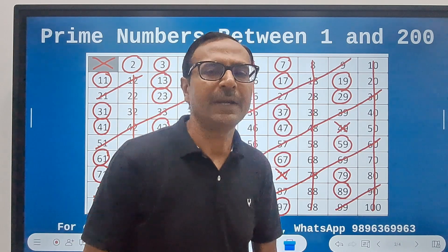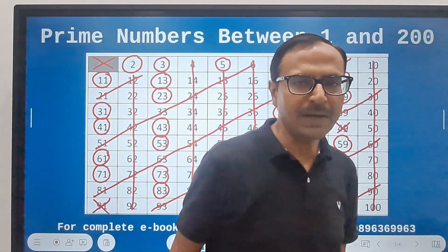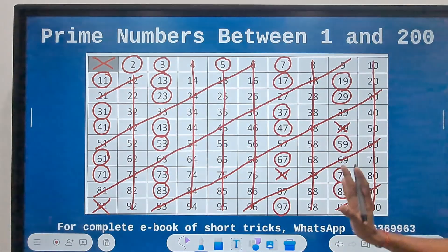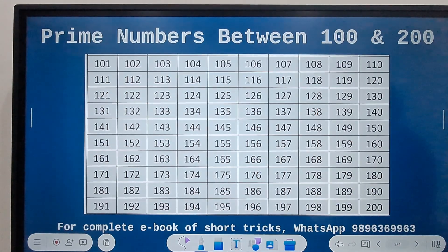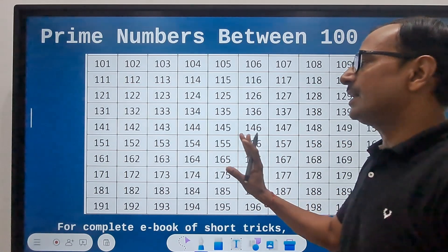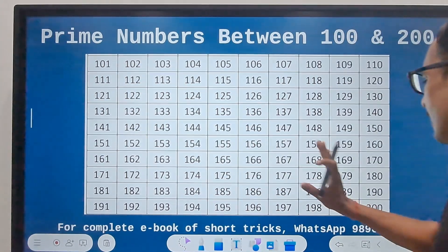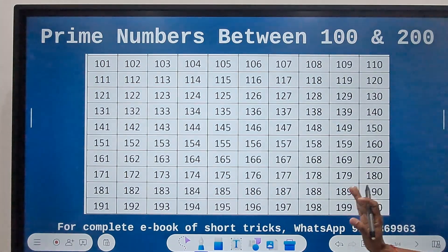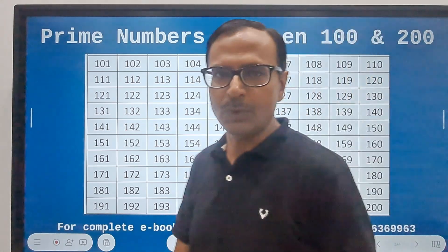Now coming to the typical part. The second part can be taken up by drawing this grid which I have taken here, 101 to 200. And now this is going to be a little challenging, so watch carefully.